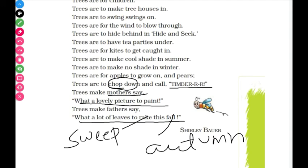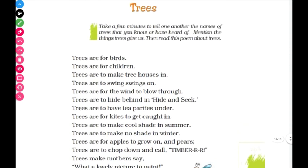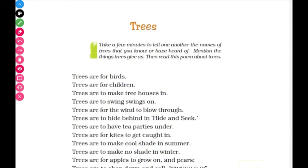The poet of this poem is Shirley Borg. The point of this poem is about the advantages of trees — trees are very useful to us. Without trees, our life will be impossible; we cannot survive without trees. The importance of trees is depicted in this poem. The poem is now completed.